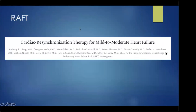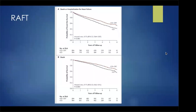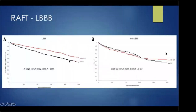RAFT was a very similar trial — CRT with EF of 35% in mild heart failure, class 2. CRT was associated with a reduction in heart failure and over time a reduction in death. RAFT also stratified patients by presence or absence of left bundle branch block, and again CRT truly only benefits those with LBBB. In those without LBBB but with a wide QRS, there was almost a sign of harm — again, non-significant.